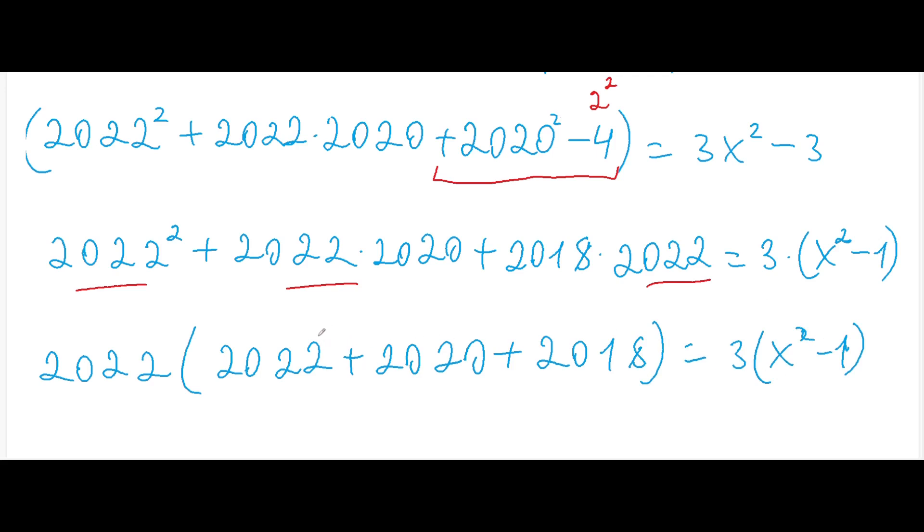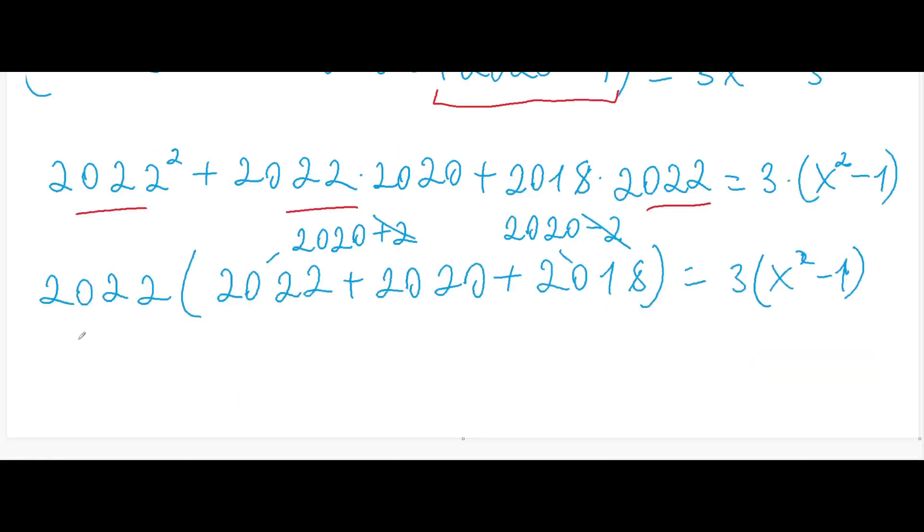And now we can write down 2022 as 2020 plus 2, and 2018 like 2020 minus 2. And now plus 2 minus 2 will give us 0, and we'll get in the bracket 2020 times 3 and it will give us 2022 times 3 times 2020.